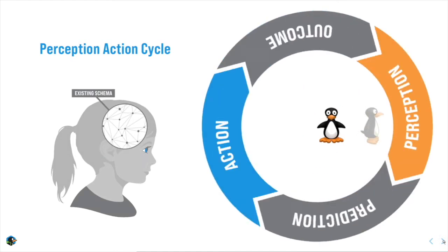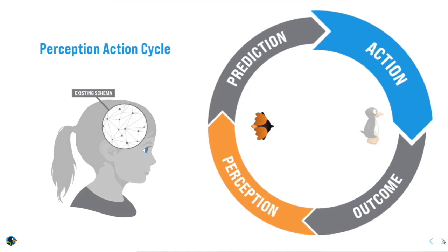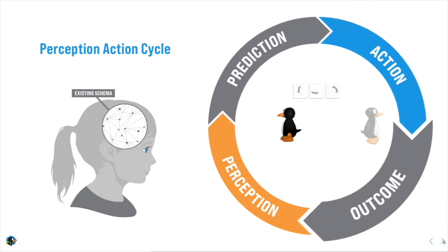But learning doesn't just happen when you get things right. Let's rewind and look at another possibility. Imagine a different schema fired up, causing us to make a different prediction and choose a different set of moves. The game still animates out.